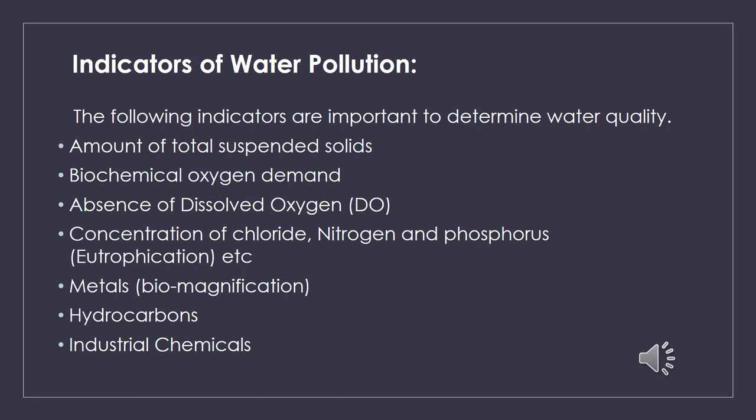Metals are also one of the indicators of water pollution, which include lead, mercury, arsenic, cadmium, and selenium. When these metals are ingested by fish and then reach humans, they may cause death. When fish is consumed with these metals over a long period, this process is known as biomagnification. We also have hydrocarbons in industrial chemicals — industrial organic pollutants that enter the environment as toxic micropollutants and grow through biomagnification.